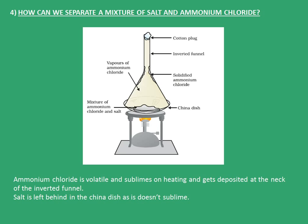An inverted funnel is kept over the china dish and the burner is heated. As soon as the burner is heated, the ammonium chloride starts to sublime. Getting in contact with the surface of the inverted funnel, it gets deposited on the neck, and this way we can separate the two components.